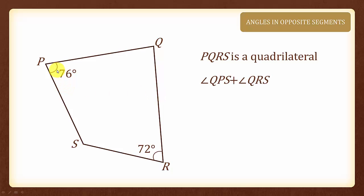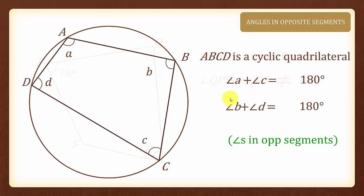Does angle P and angle R add up to be 180 degrees? No, they don't. The opposite angles only add up to 180 degrees if they are opposite angles in a cyclic quadrilateral.